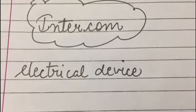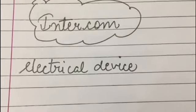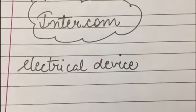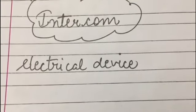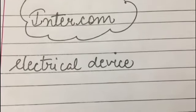Intercom is also a means of communication. It is an electrical device that helps people talk across different floors of the same building. For example, in an office building, a person sitting on the first floor can communicate with a person on the second or third floor using the intercom. So intercom is an electrical device that allows people on different floors of the same building to speak to one another.